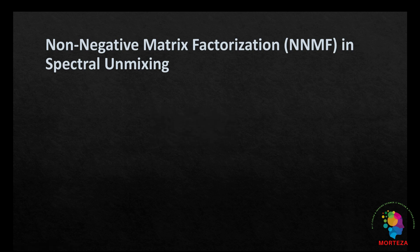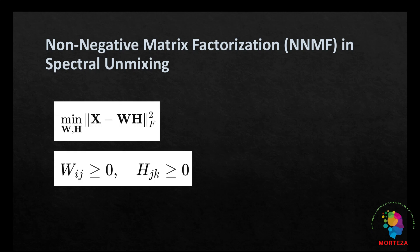The objective of NNMF is to minimize the difference between the original data matrix X and the product of the factor matrices W and H. Mathematically this can be expressed as shown here. The algorithm iterates to find W and H under the non-negativity constraint.